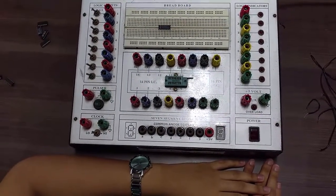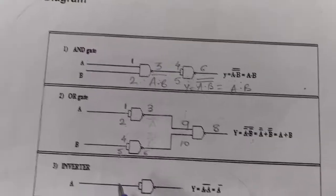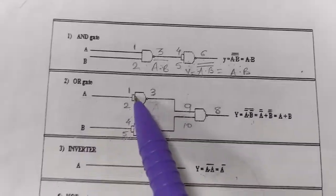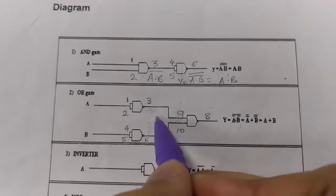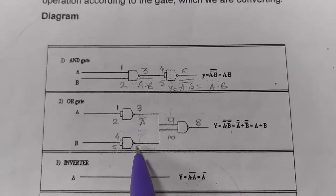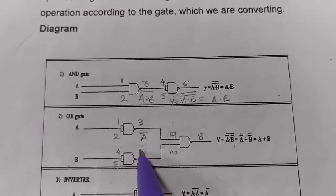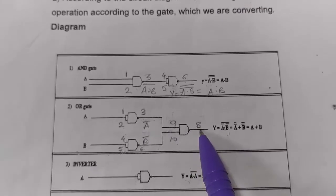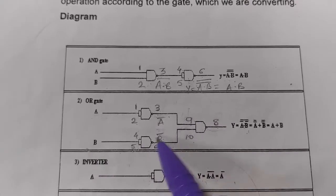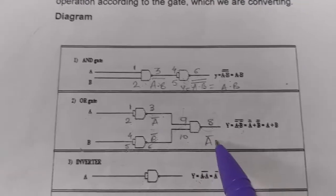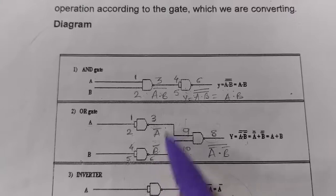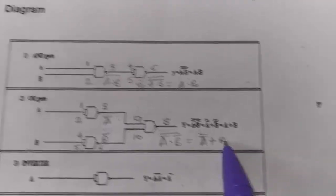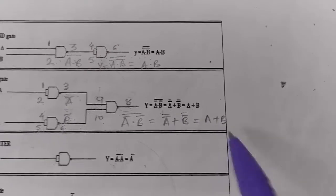Similarly we can get all gates with the help of NAND gate. This is how we obtain OR gate with the help of NAND gate. We give input A and short pin number 1 and 2, and take output from pin 3 — so this becomes A bar. Pin number 4 and 5 are shorted and output is taken from pin number 6, so this becomes B bar. A bar and B bar are given as input to the third gate at pins 9 and 10 and output is taken from pin 8. Using De Morgan's law, the equation simplifies to A + B. This is how we get OR gate.